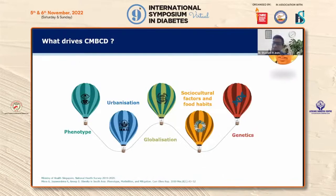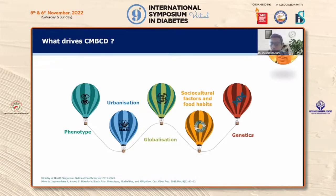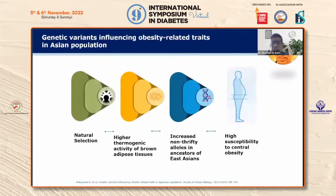What is driving ABCD or CMBCD is the phenotype. Geographies like China and India have a phenotype that predisposes them to ABCD or CMBCD. We have rapidly urbanized our environment, become a global village with the internet explosion, and have many social and cultural factors. As affluence has increased, the likelihood of adipose tissue depositing at abnormal sites has gone up, along with genomic predilection, and food habits have worsened.